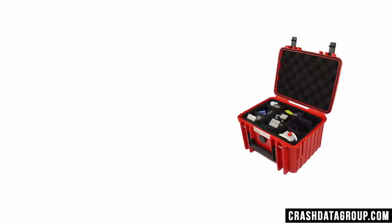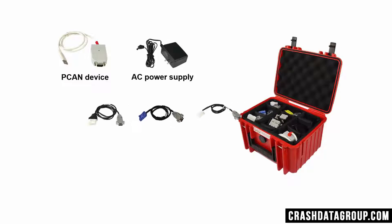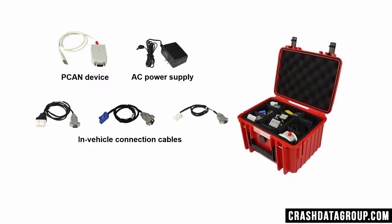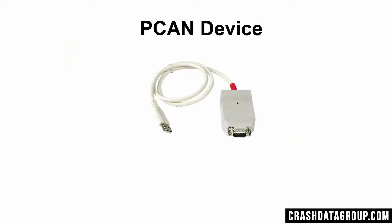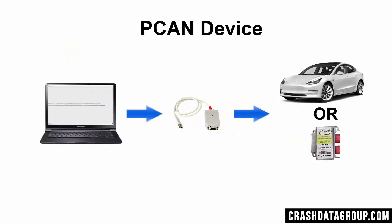The Tesla EDR kit contains the PECAN interface device, an AC power supply, connection cables to access and download EDR data via a Tesla in-vehicle connection port, and connection cables to connect directly to an RCM to download the data. The PECAN interface device allows your computer to communicate with Tesla Vehicle Communication Networks, and ultimately with the Restraints Control Module. A PECAN device software driver must be installed on your computer, and we'll discuss how to install the driver in just a minute.